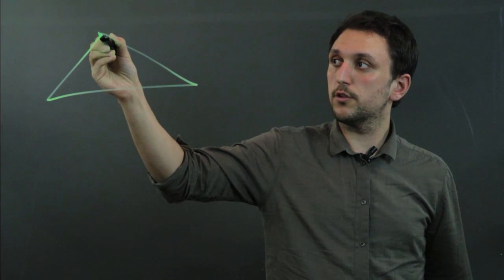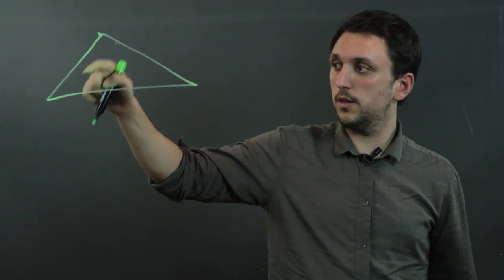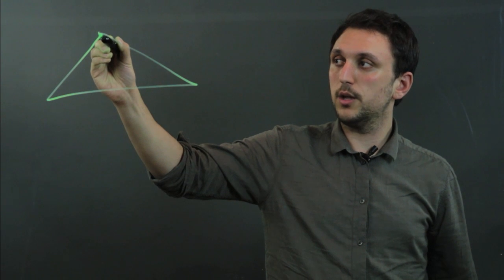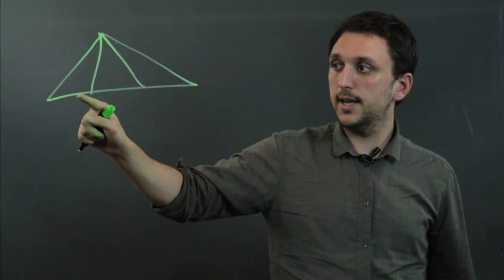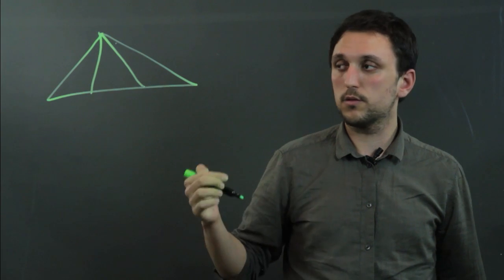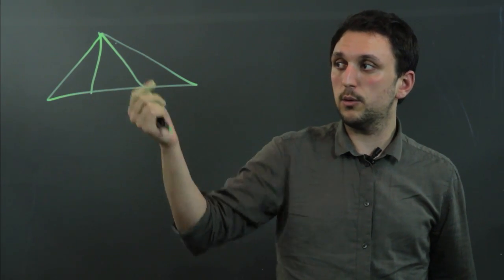To divide it into three equal triangles though, we just take one point, one of the vertices, and we draw a line and a line cutting this opposite side into three equal parts. And if we do that, then we get three equal triangles.